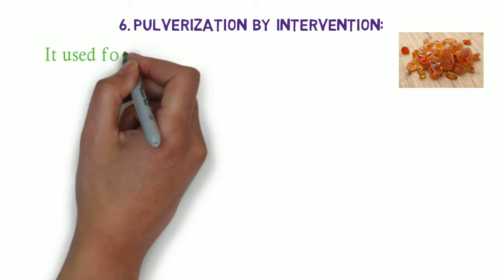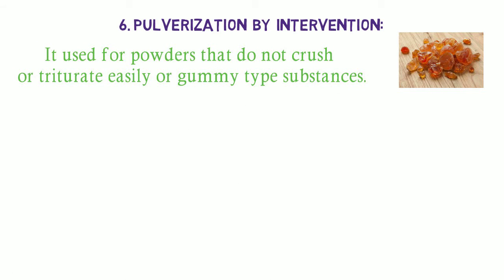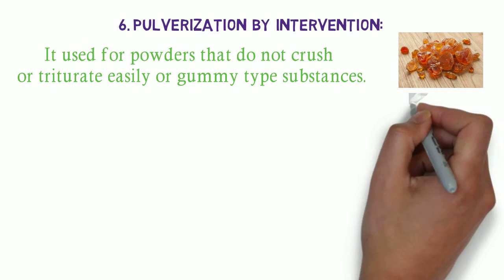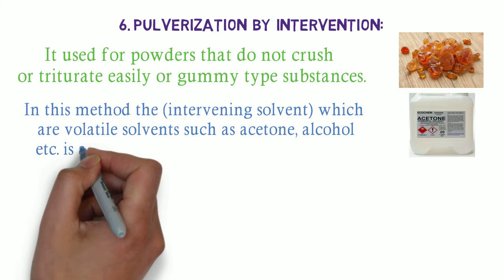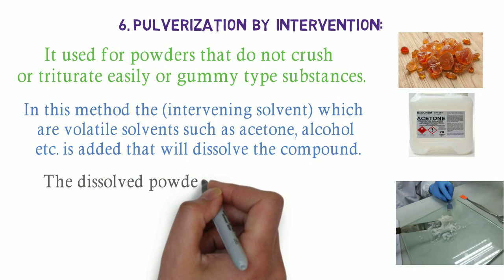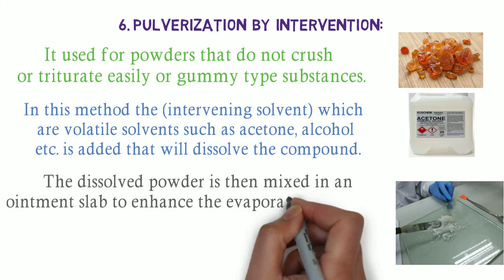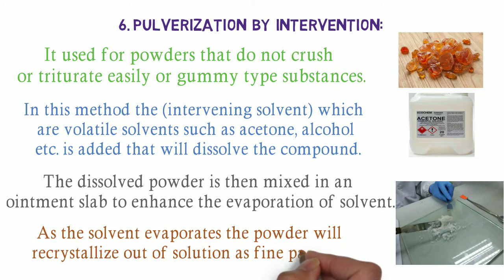Pulverization by intervention: this method is used for powders that do not crush or triturate easily, or gummy type substances. In this method, the intervening solvent, which are volatile solvents such as acetone, alcohol, etc., is added that will dissolve the compound. The dissolved powder is then mixed on an ointment slab to enhance the evaporation of solvent. As the solvent evaporates, the powder will recrystallize out of solution as fine particles.